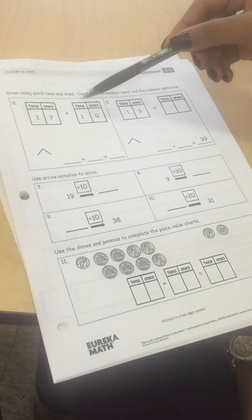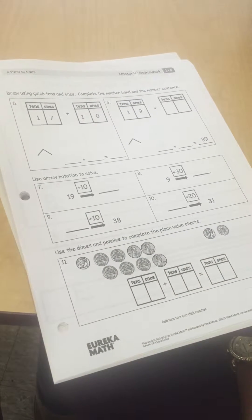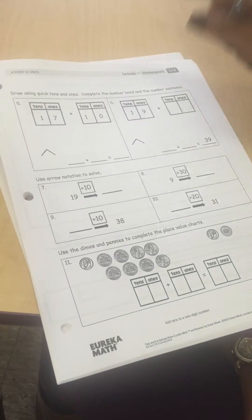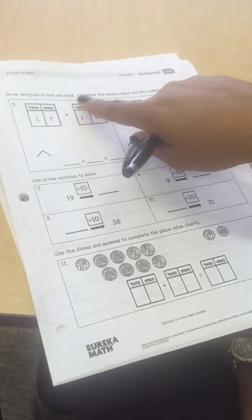I'm going to go over number five, seven, and nine to help you with your child's homework tonight. For the first part it says draw using quick tens and ones, complete the number bond and the number sentence.